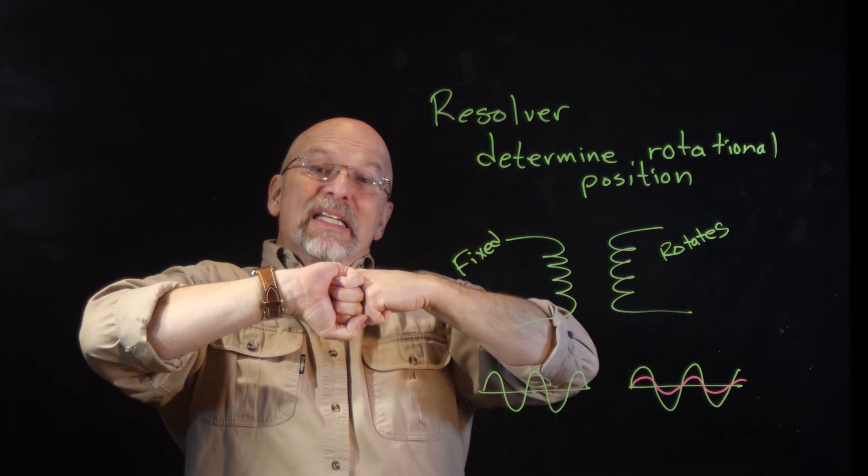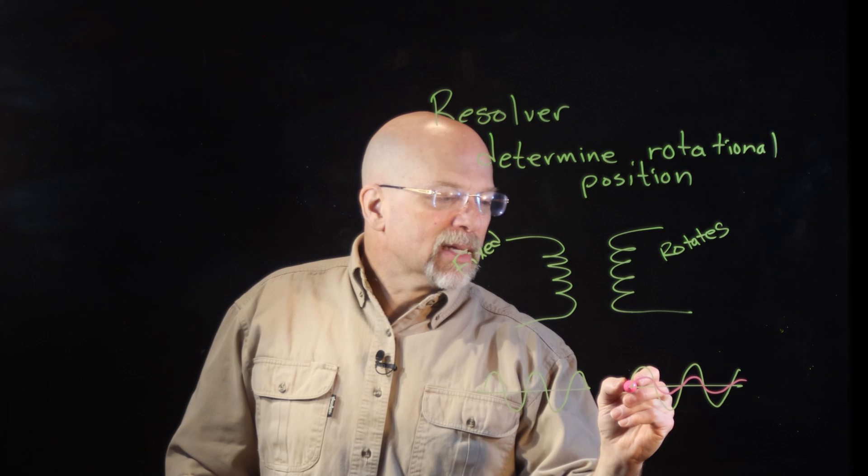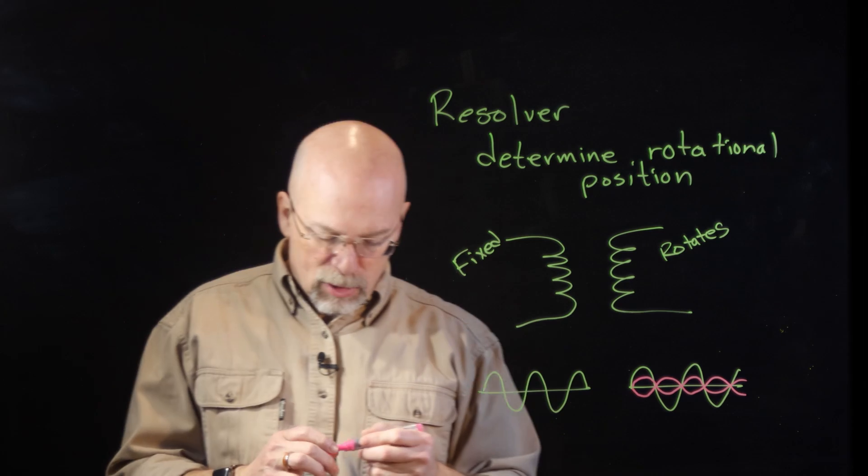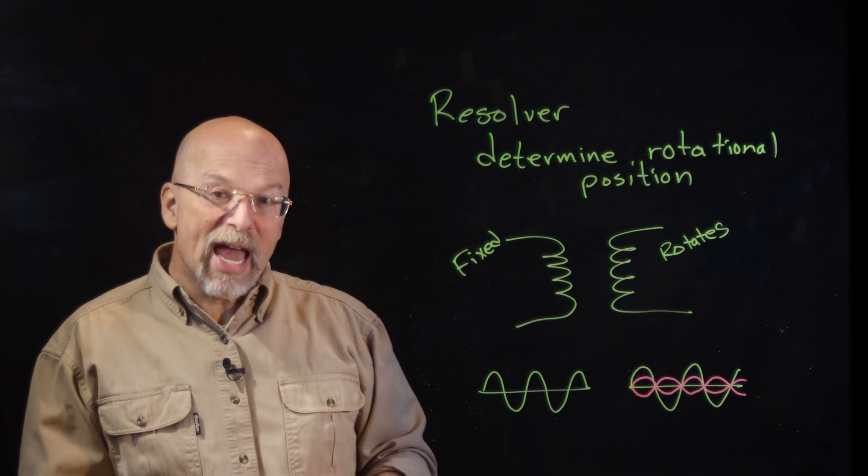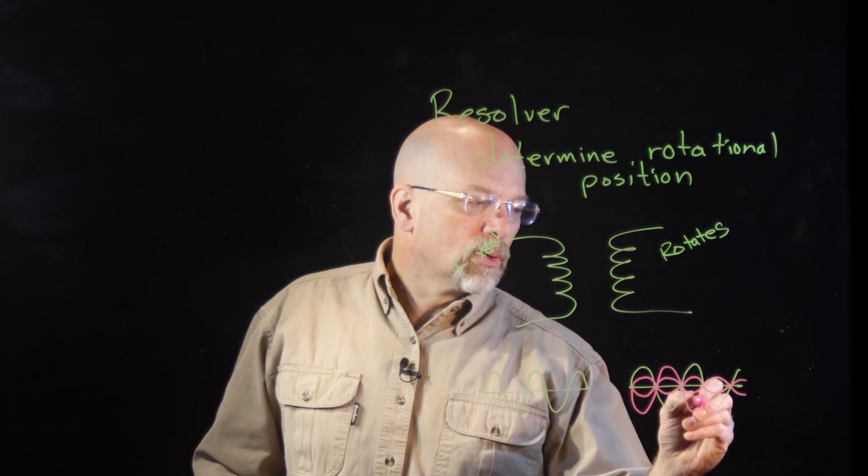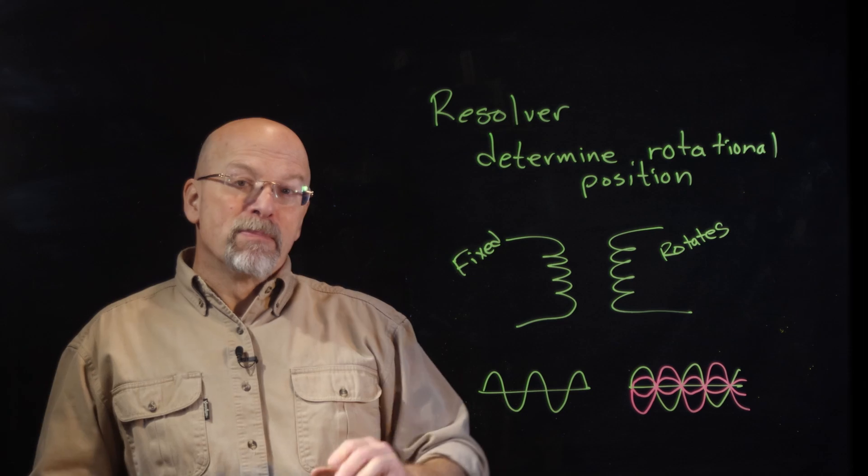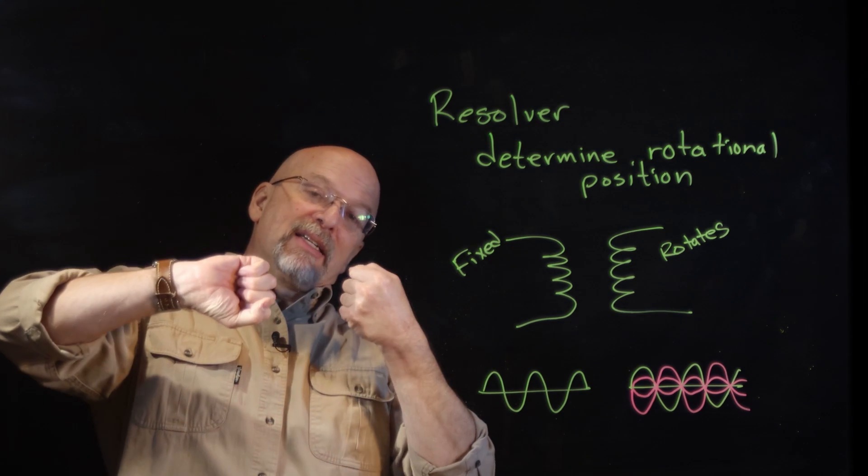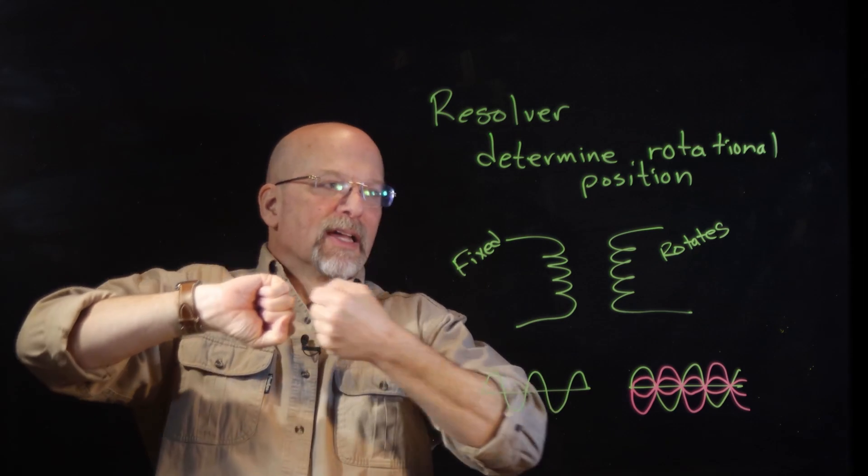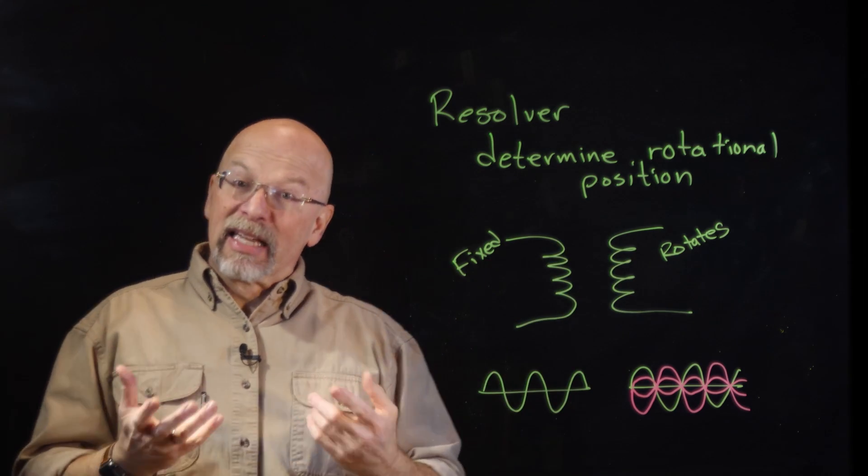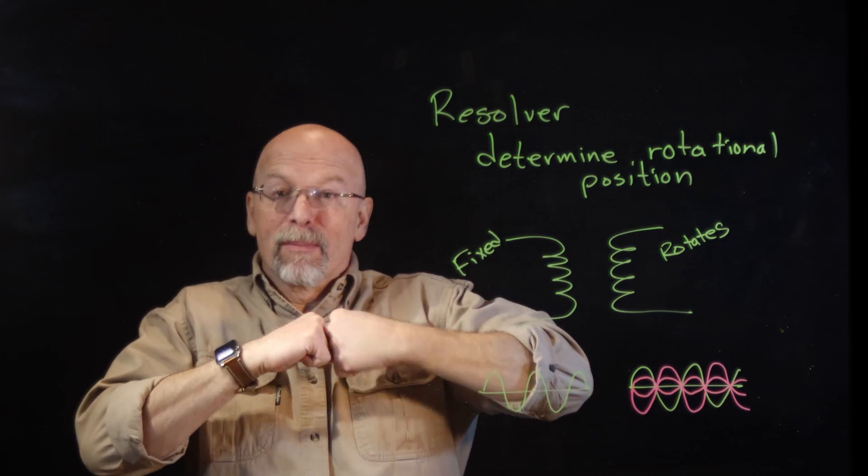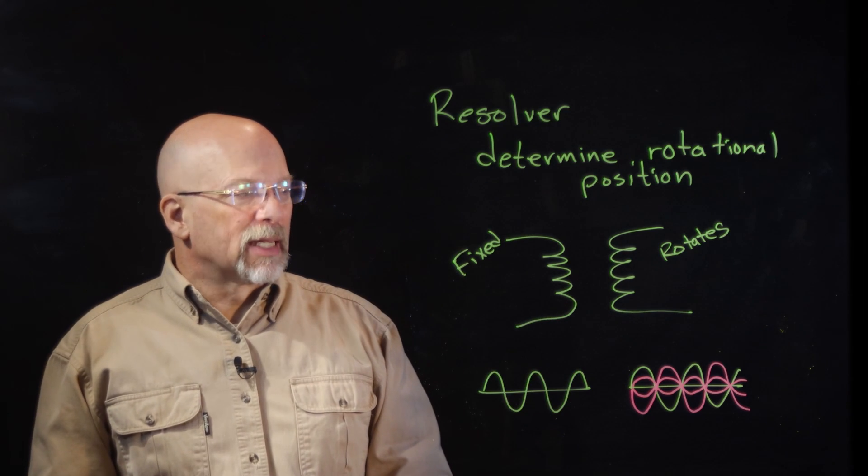Now if you continue to turn, what's going to happen is our frequency is going to stay the same, but the amplitude is going to flip, it's going to go negative. And in fact, when we get to a point where the amplitude is back to the maximum amplitude, but it's 180 degrees out of phase, that means that the fixed coil is 180 degrees out of phase with the rotated coil. Gives you the ability to identify the position of a rotating shaft.